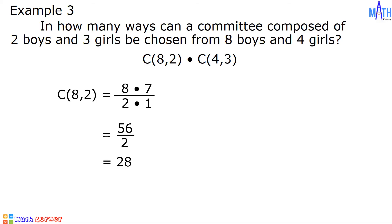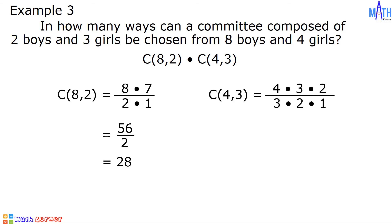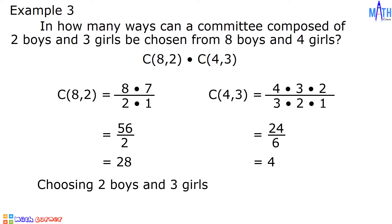There are 28 ways of choosing 2 boys. Next, the combination of 4 taken 3 at a time is equal to 4 times 3 times 2, all over 3 times 2 times 1. 4 times 3 times 2 is 24, over 3 times 2 times 1 is 6. 24 divided by 6 is 4. There are 4 ways of choosing 3 girls. The number of ways of choosing 2 boys and 3 girls is equal to 28 times 4, which is equal to 112.